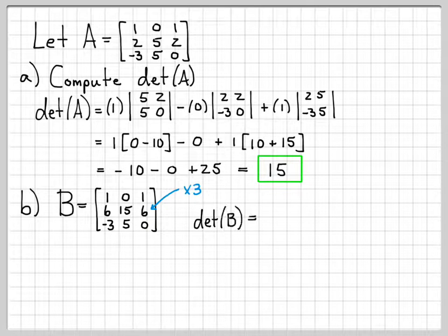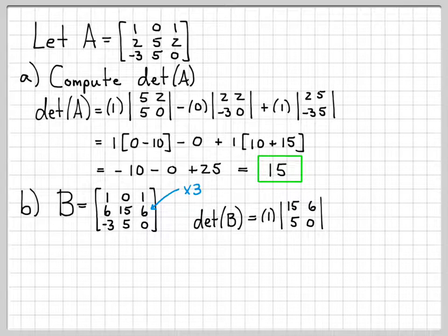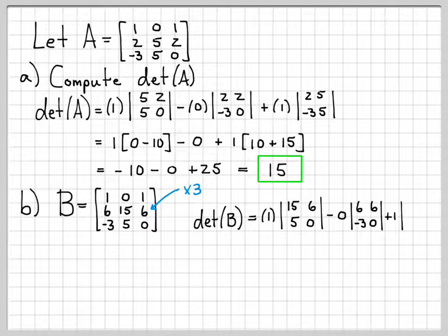So let's go ahead and compute the determinant of B. And let's see how the value of the determinant of B has changed since the only thing we've done is change one row by a factor of 3. So again, let's just do normal cofactor expansion about the first row.